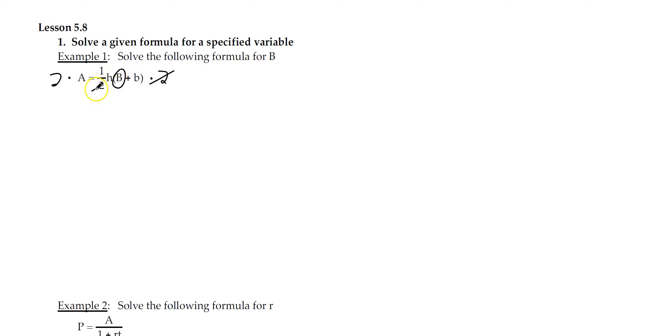So definitely want to use this 2 to get rid of that fraction. We now have 2A equals h times big B plus little b. Let's distribute. 2A equals h big B plus h little b.